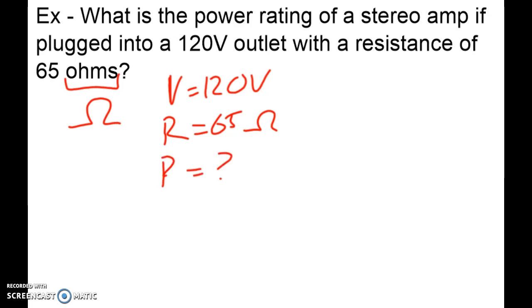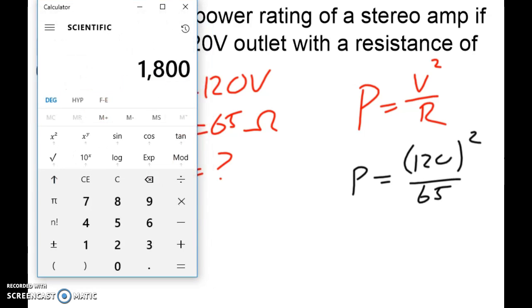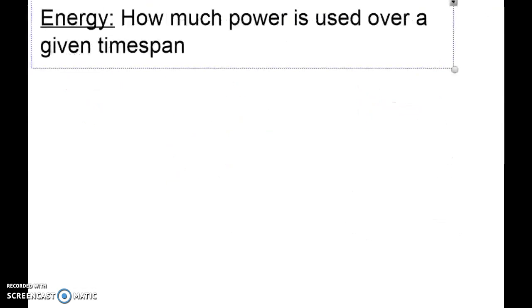Now we saw from the previous page that the equation for power can also be V squared divided by R. So when we plug those in we have P is equal to 120 squared divided by 65. So with 120 squared divided by 65 we end up with a power rating of 221.5 watts.